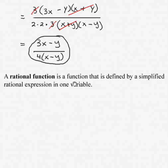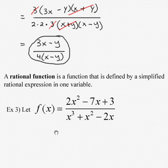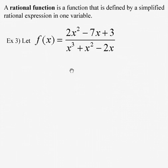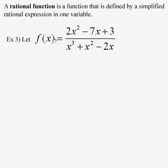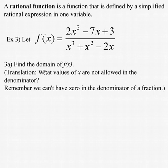A rational function is a function that's defined by a simplified rational expression in one variable. So let f of x represent a rational function f of x is 2x squared minus 7x plus 3 over x to the third plus x squared minus 2x. And our job is to find the domain.